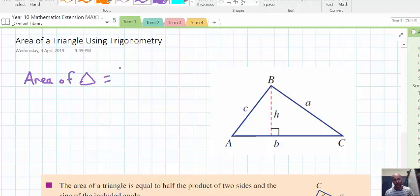You might have written half times base times the perpendicular height, or base times perpendicular height over 2. And if we use symbols, half times bh.